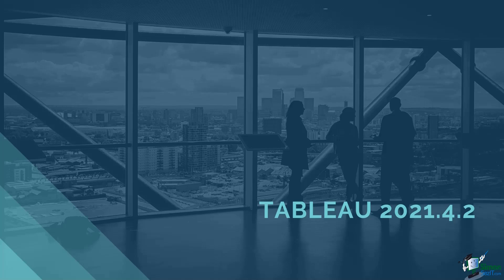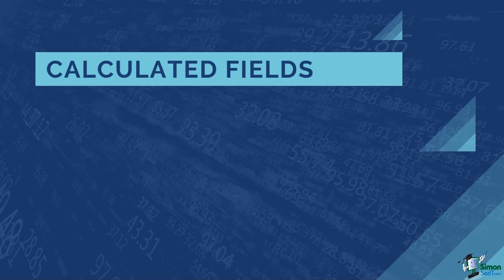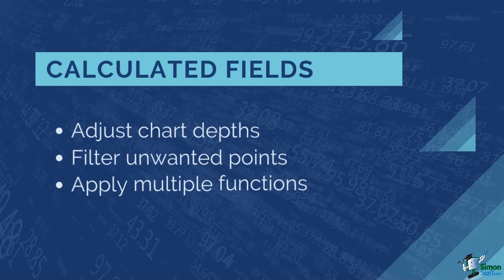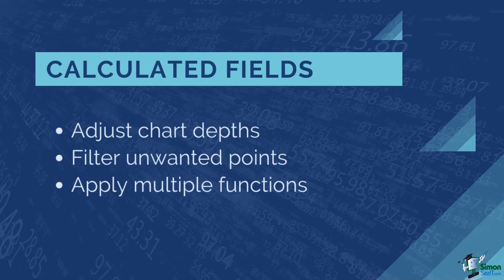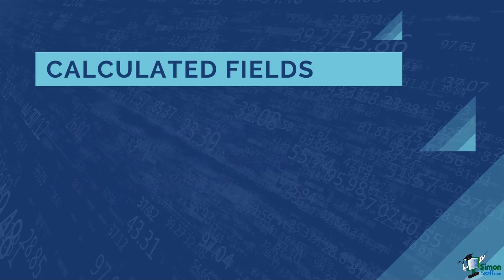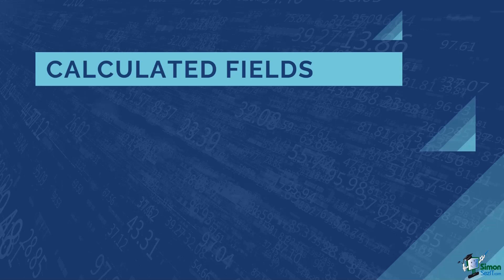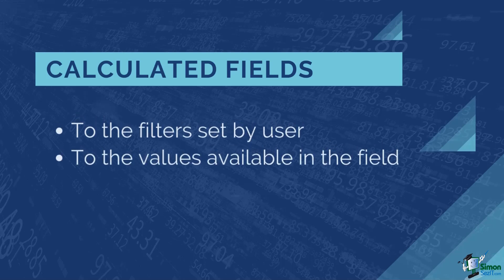Head on to the next lesson to find out more about parameters. From the beginner Tableau course, we talked about calculated fields where we indicate a premeditated formula, condition, or static value to be utilized by our visualization. This lets you, as the developer, adjust the depth of your charts, filter out unwanted points, and apply multiple functions to your data. But calculated fields alone can't let users indicate their specific criteria for those calculations in their dashboard. A user is limited to the filters they set as well as the values presently available in the field, which can result in limitations in analysis and defeat the purpose of effective visualization.